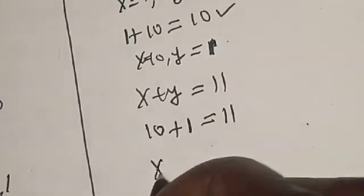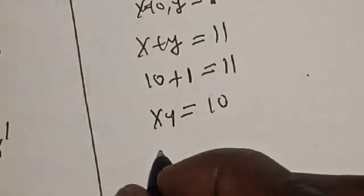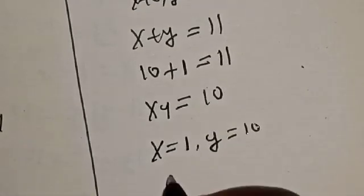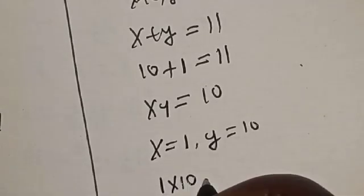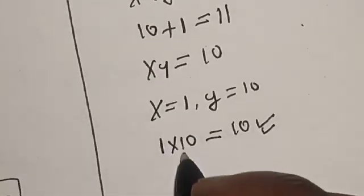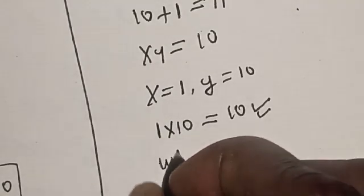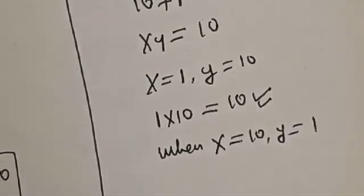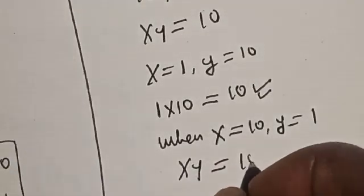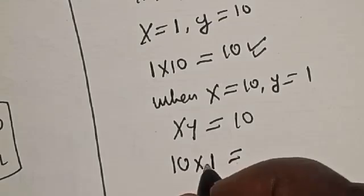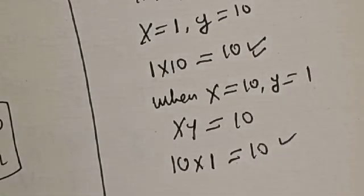Now, let's check with equation 2: xy is equal to 10. When x is equal to 1 and y is equal to 10, we have 1 multiplied by 10, which is equal to 10 — this also satisfies the given equation. Also, when x is equal to 10 and y is equal to 1, xy is equal to 10 times 1, that is 10. So, we satisfy the given equation as well.